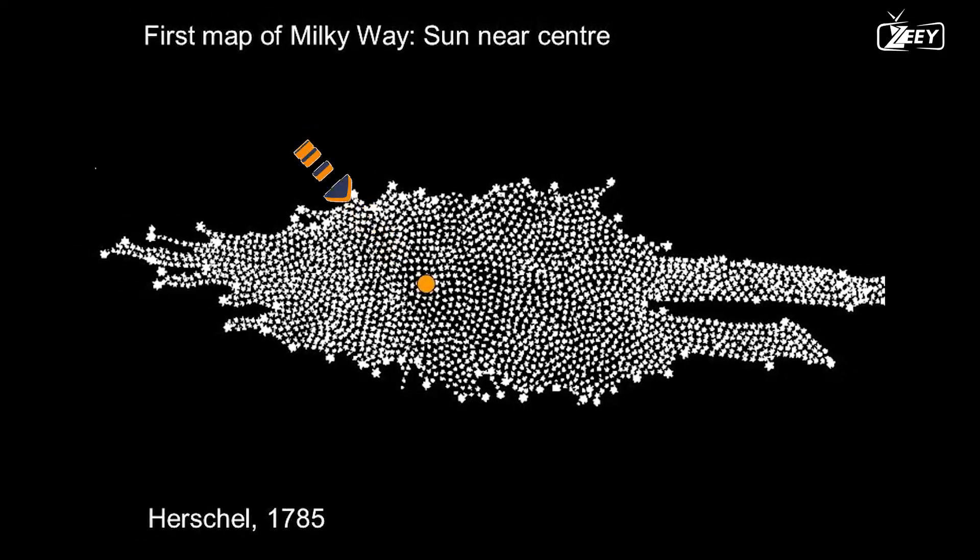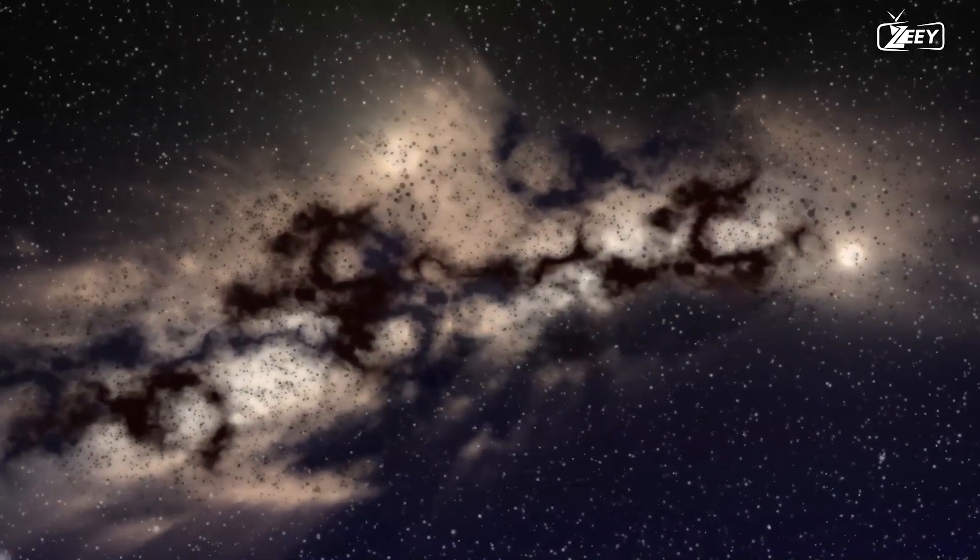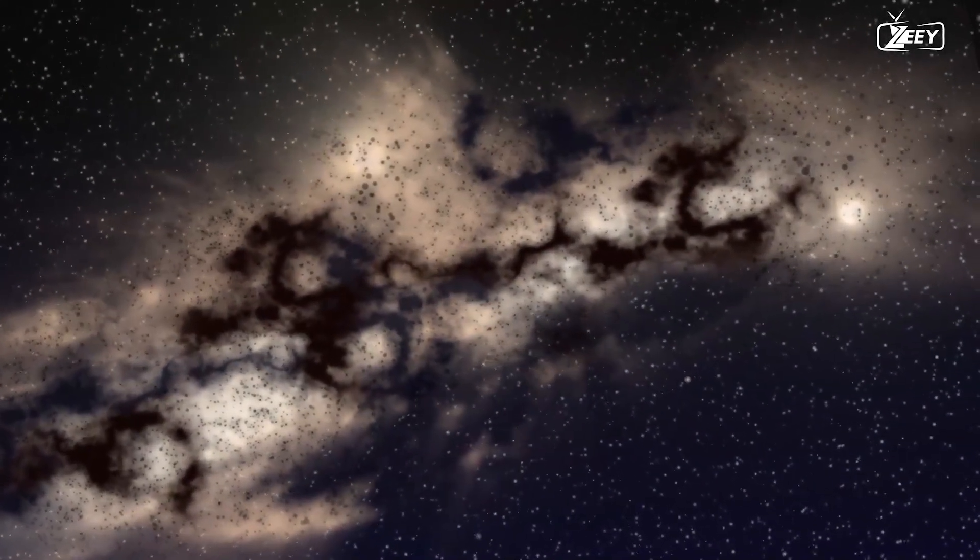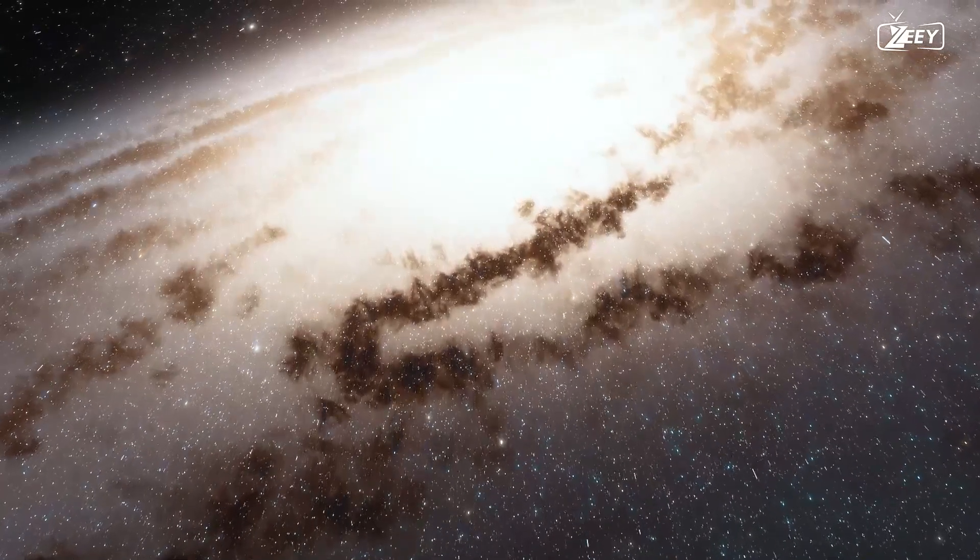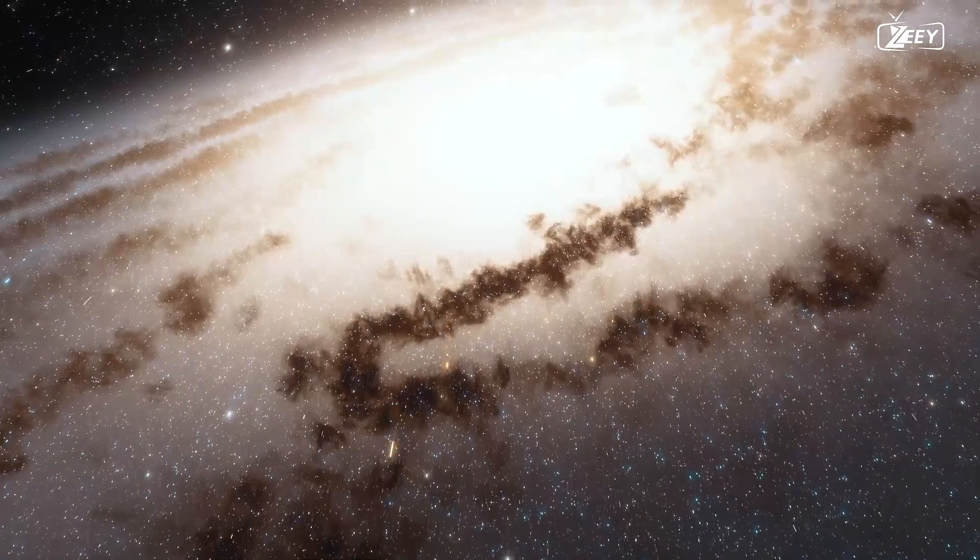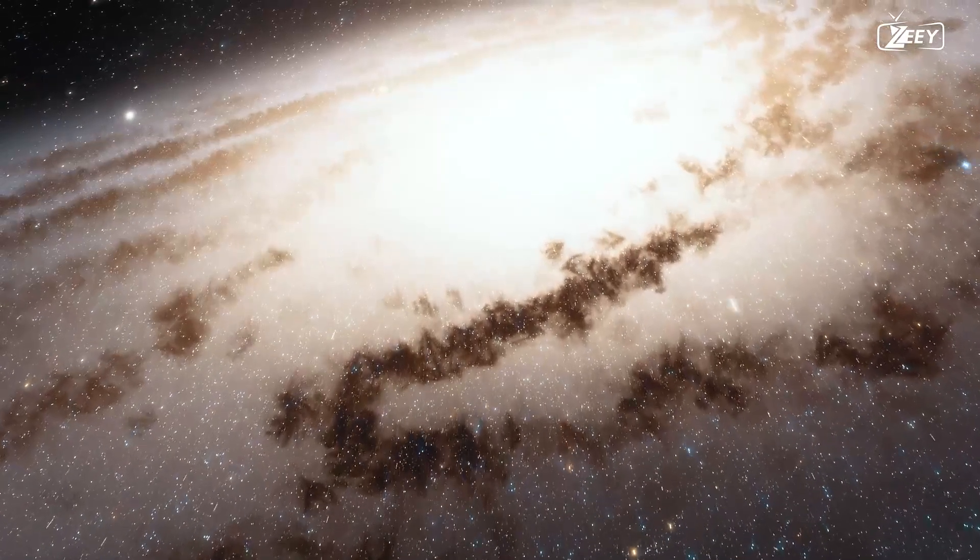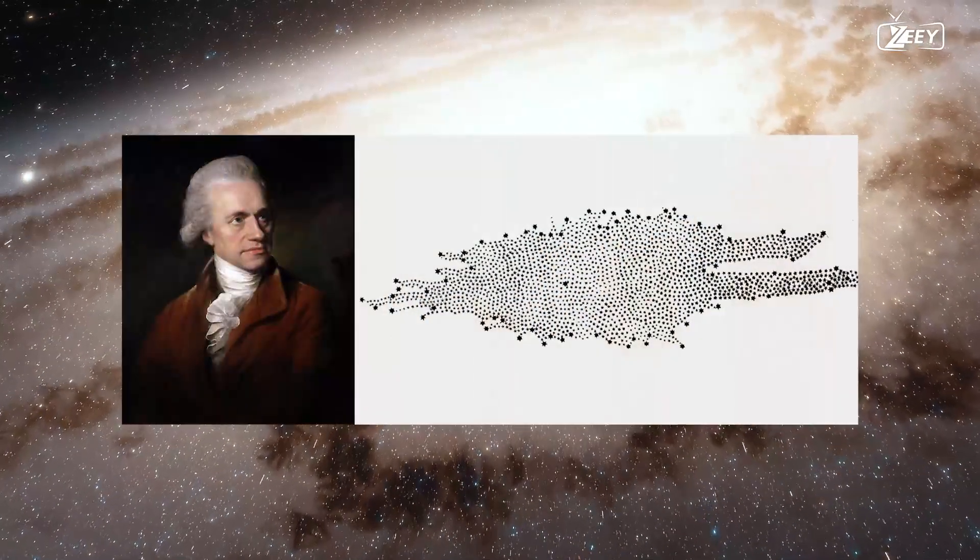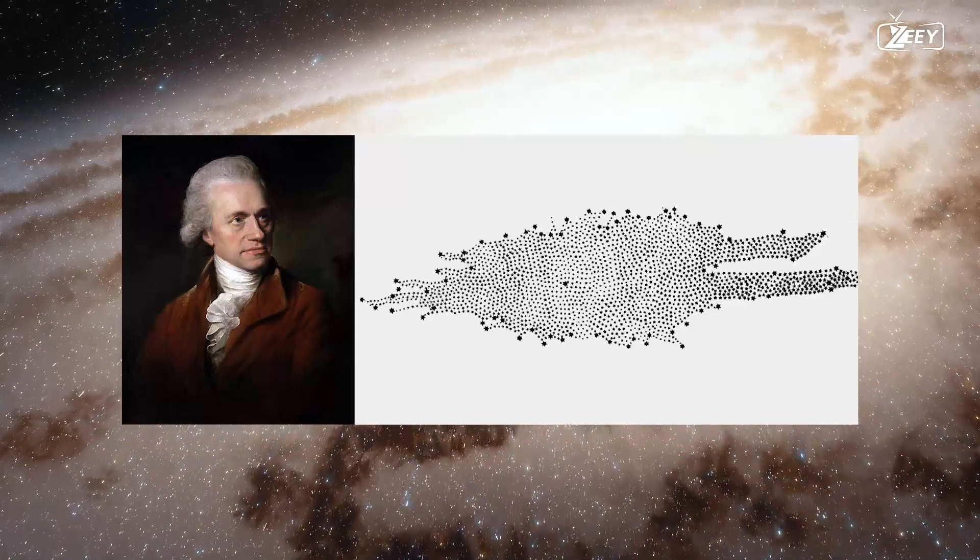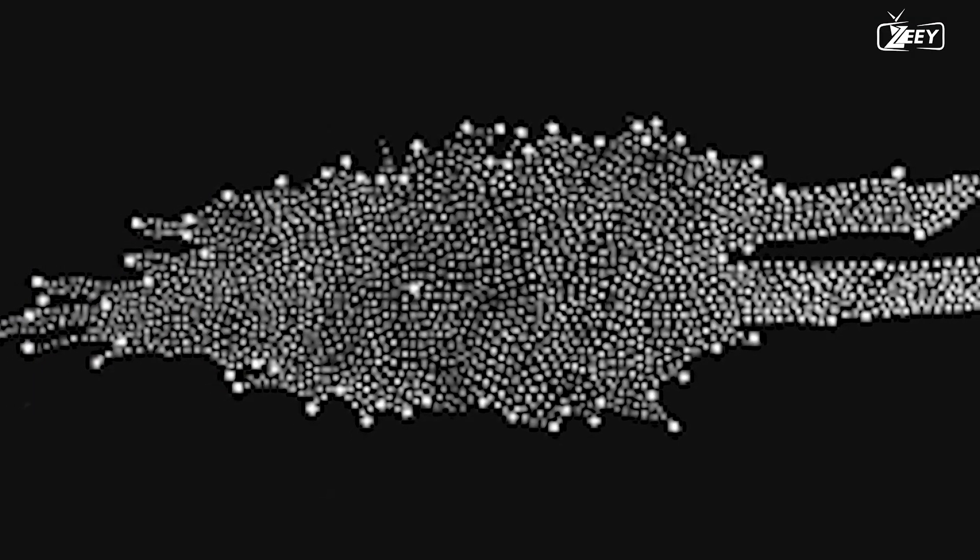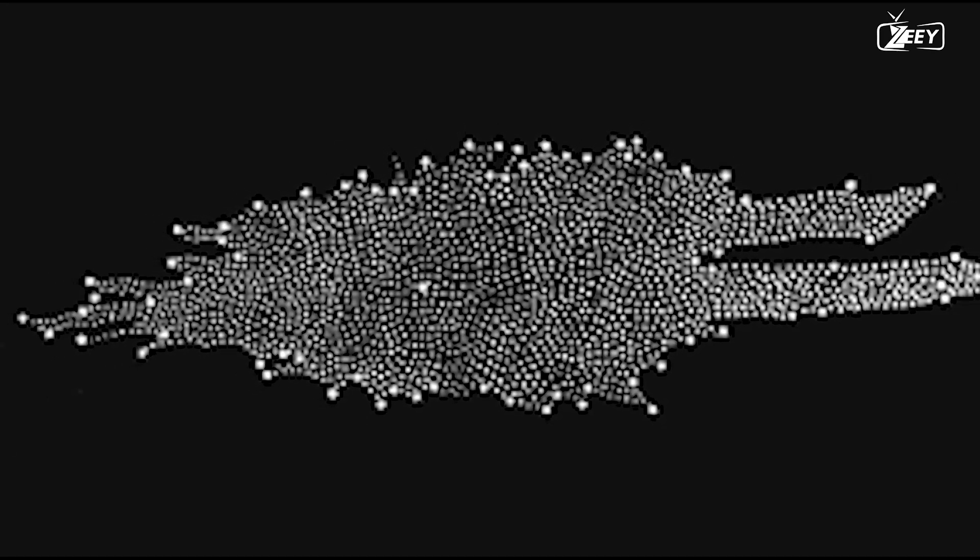However, the map created by Herschel was not wholly accurate. He was oblivious of the existence of interstellar dust, which blocks our view of stars in the Milky Way's central region. Consequently, Herschel's map inaccurately depicted the central region of the Milky Way as significantly less dense than it actually is. His map was a major breakthrough in our comprehension of the Milky Way, despite its inaccuracies. It was the first map to depict the Milky Way as a disk and it provided crucial information about our galaxy's structure.